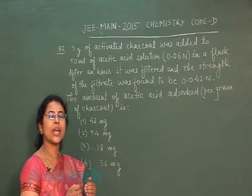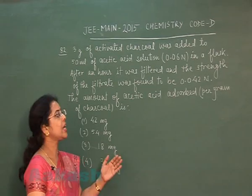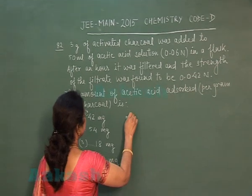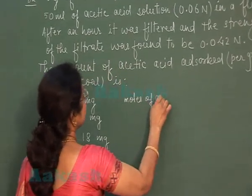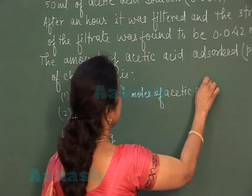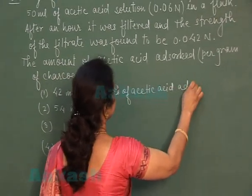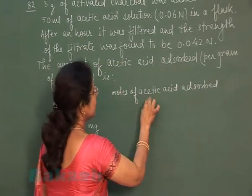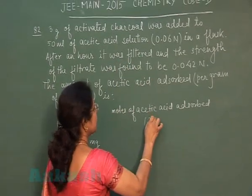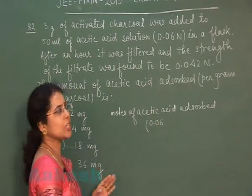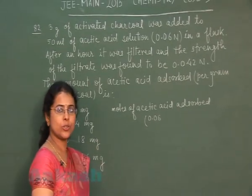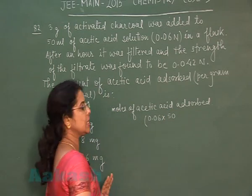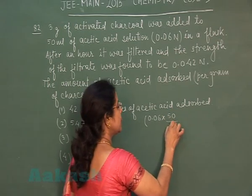This question is based on the adsorption phenomenon. Let us calculate the moles of acetic acid adsorbed. Initially, we have taken acetic acid with normality 0.06, which means molarity is also 0.06. The volume of the acetic acid solution is 50 milliliters, so this is 50 by 1000 liters.